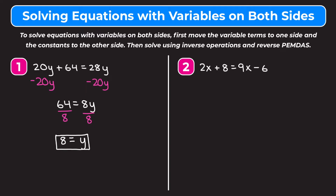Now we're going to take a look at an example where we have variables on both sides and constants on both sides. Example two is 2X plus 8 equals 9X minus 6. We can start by moving the constants to one side first or the variables to one side first — it doesn't matter.